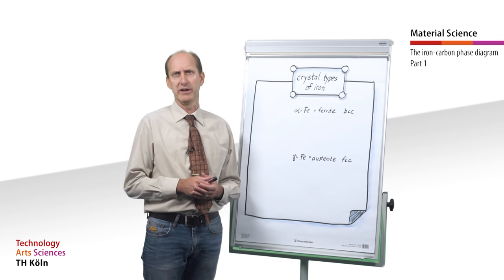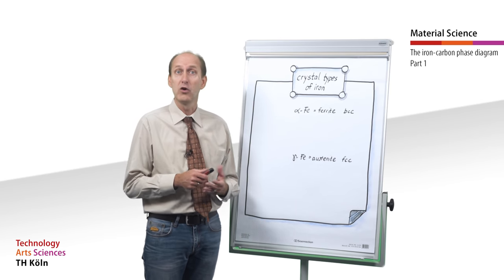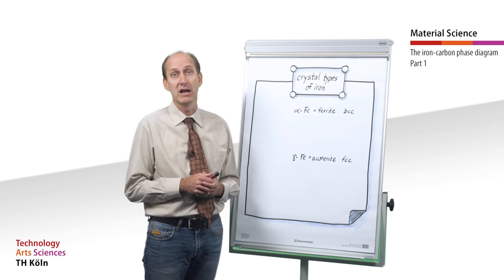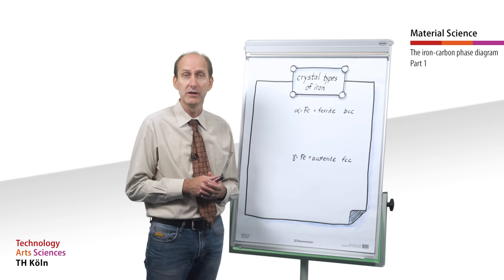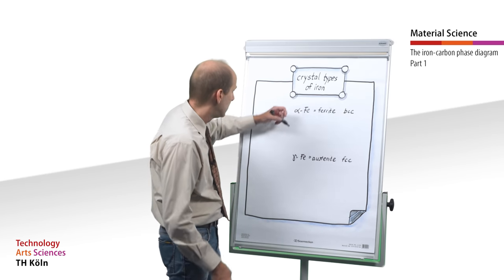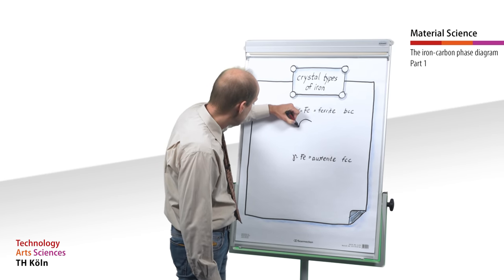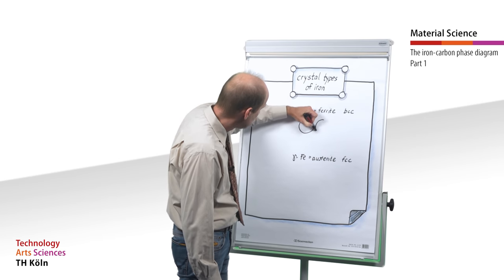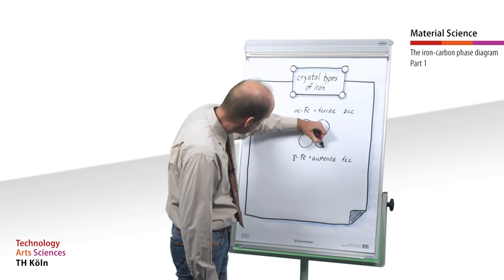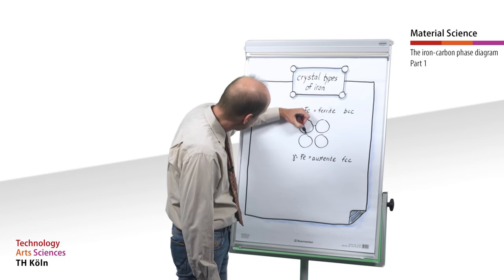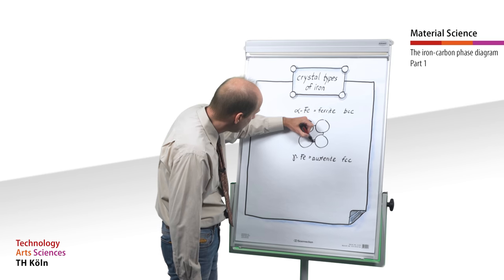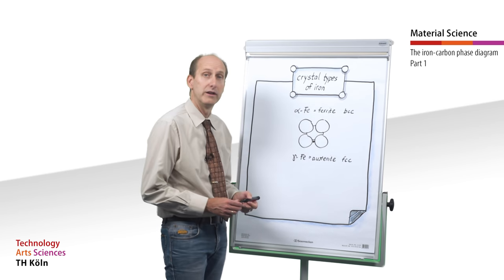Although the body-centered cubic alpha iron features a lower packing density, the existing lattice vacancies are only very small and allow only atoms with a diameter of 15% of iron to be absorbed within without stress. So I want to draw the body-centered cubic lattice to further illustrate this behavior. So here we see the body-centered cubic lattice and we see that we only have very small lattice vacancies.